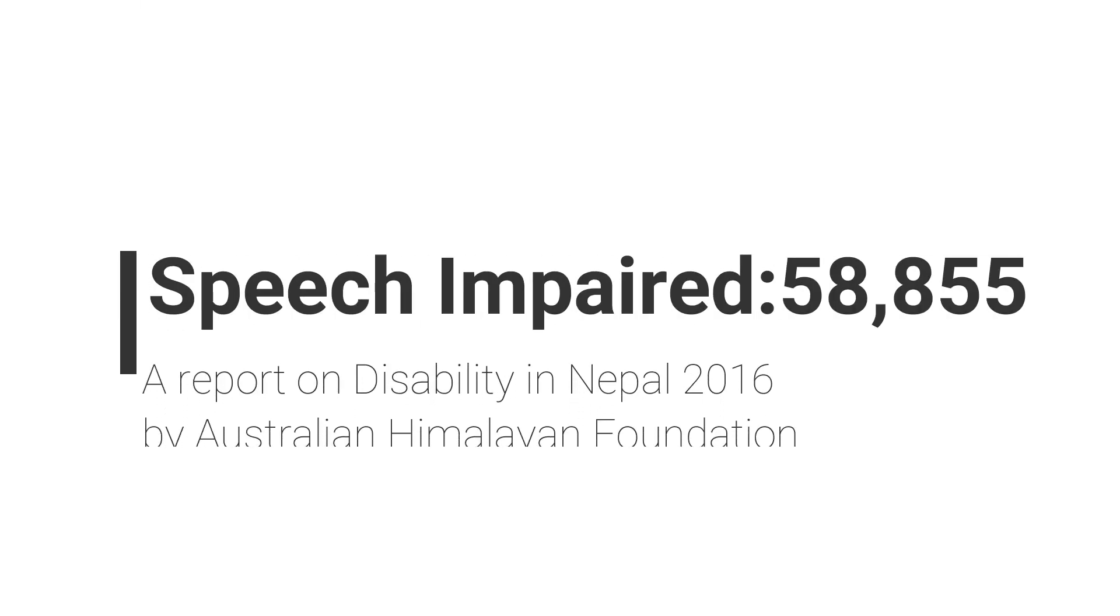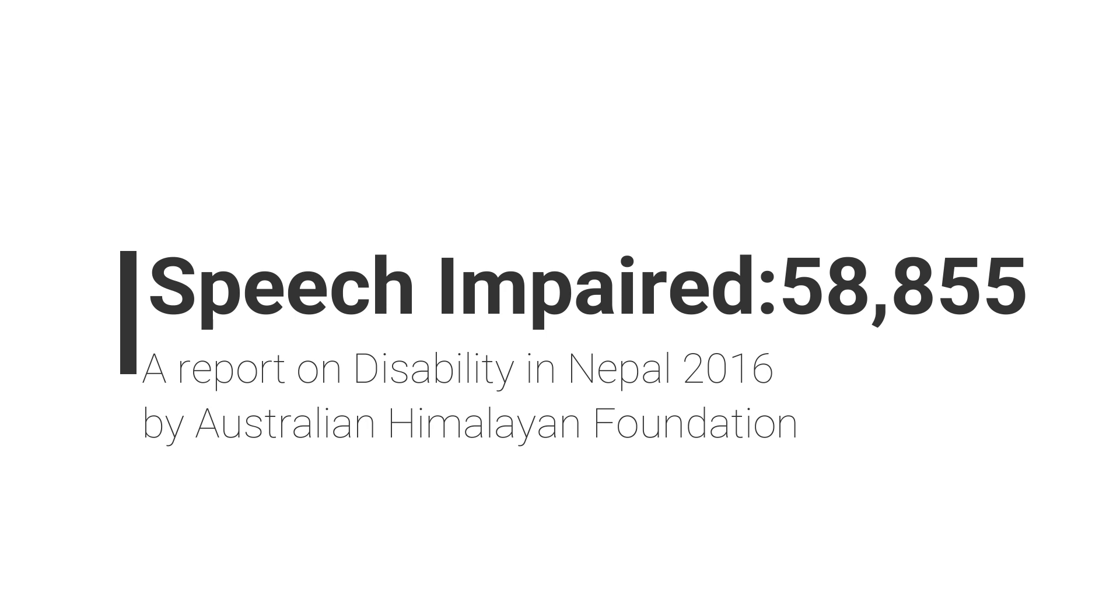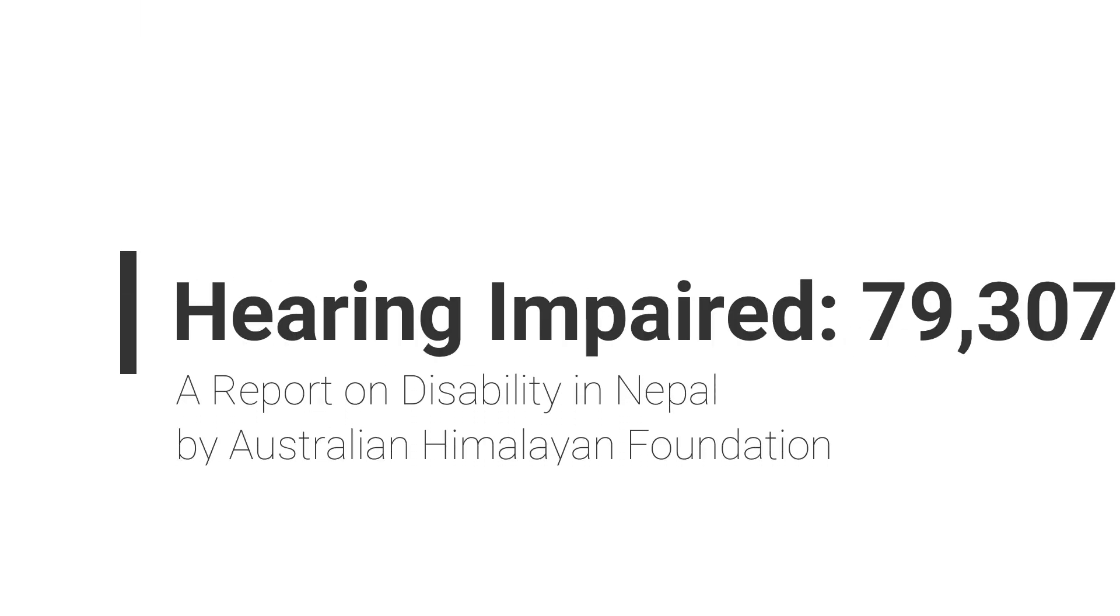According to a report published by Joshua Project, the population of hearing and speech impaired people in Nepal is roughly 218,000. Similarly, a report on disability in Nepal published by Australian Himalayan Foundation in 2016 puts the number of speech impaired people at 58,855 and hearing impaired people at 79,307.